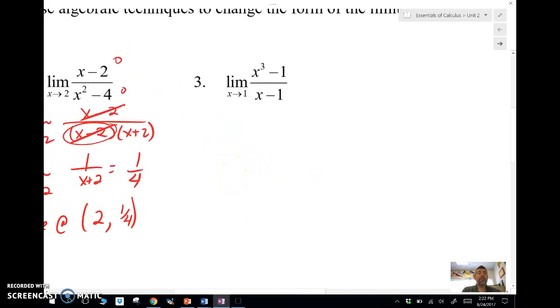Number three. Again, if I plug in one, we always try to plug in. That's the first thing we always do with limits. Try to plug it in to see what happens. So it might not be indeterminate, but if it is, we got to do some math. Limit as X approaches one. I'm going to factor the top using the difference of cubes formula. So that's X minus one times X squared plus X plus one, difference of cubes.